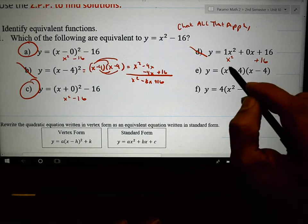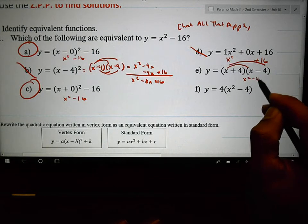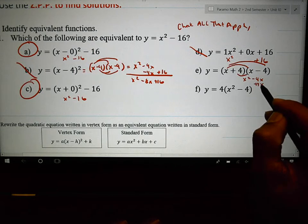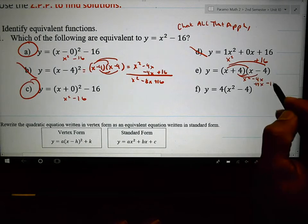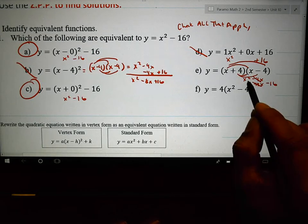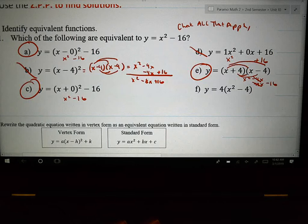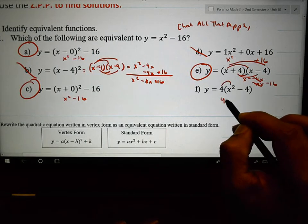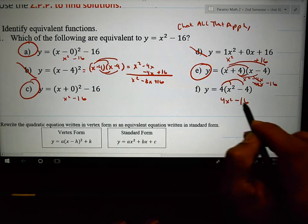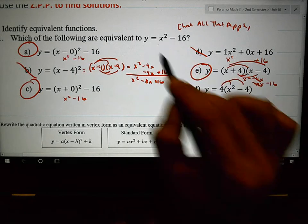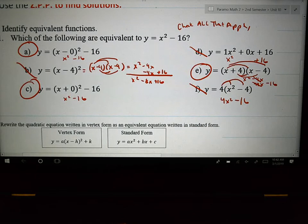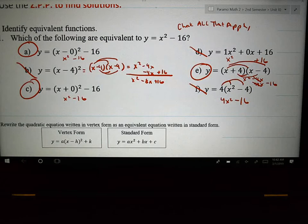What about e? Let's foil this out. Let's find out. x squared minus 4x plus 4x. Something's going to happen there. Minus 16. 4x minus 4x makes 0. x squared minus 16 is what I'm getting. Is that the same? Yes, it is. It's equivalent. And for f, let's check. I have 4x squared minus 16. It looks close. But this is 4x squared and that is just x squared. So no, it is not. Three answers were equivalent. Three answers were not. Do not be afraid to have multiple answers correct on numbers 1 and 2.